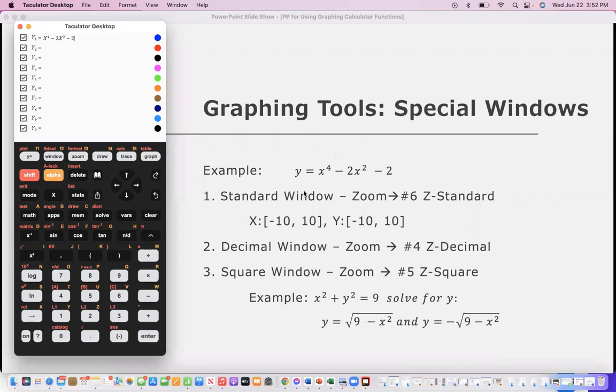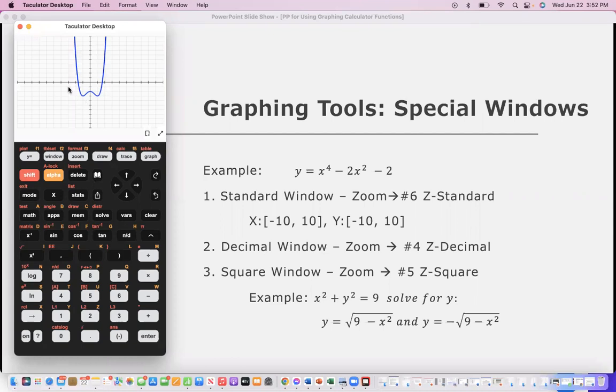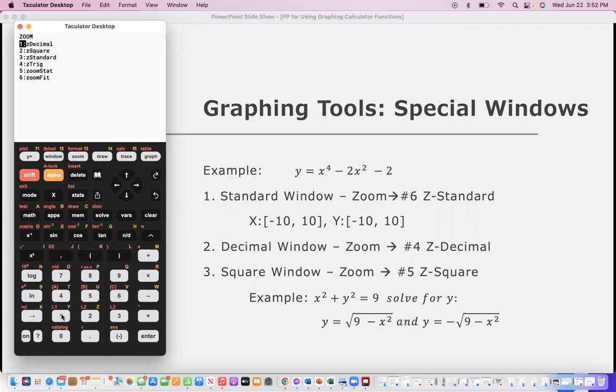There's also some special windows. As we're going to look at this example here with y equal to x to the fourth minus 2x squared minus 2, the first is your standard window which you have already been introduced to under zoom number 6 it's that z-standard, like here for me it's choice number 3. This is going to be that negative 10 to positive 10 negative 10 to positive 10 viewing window.